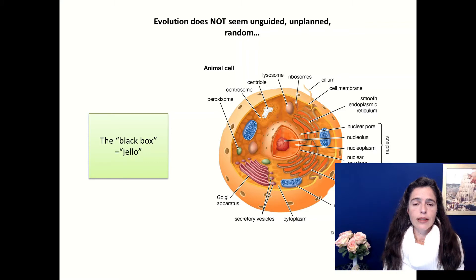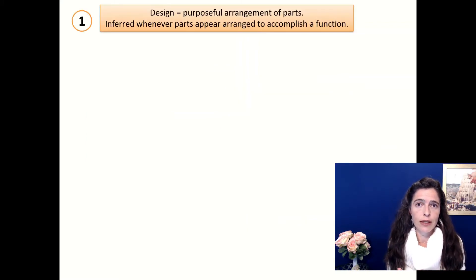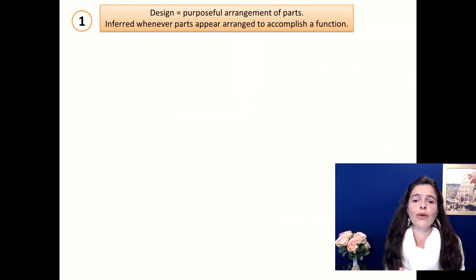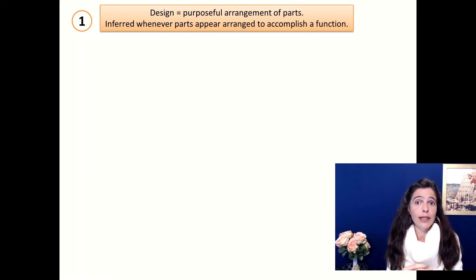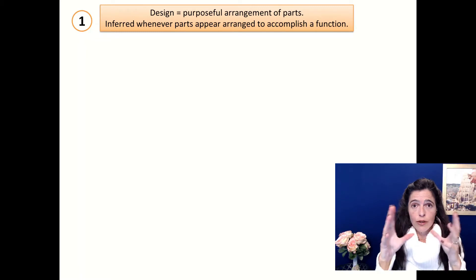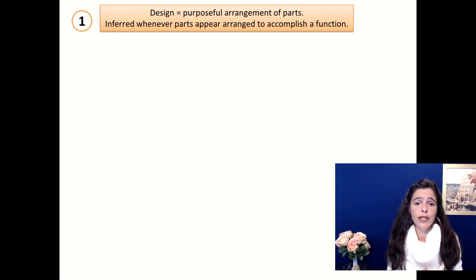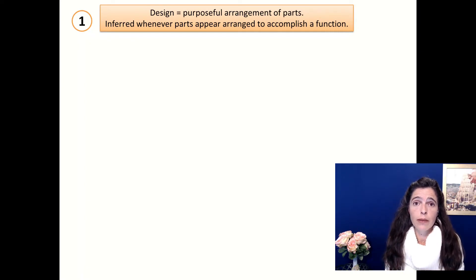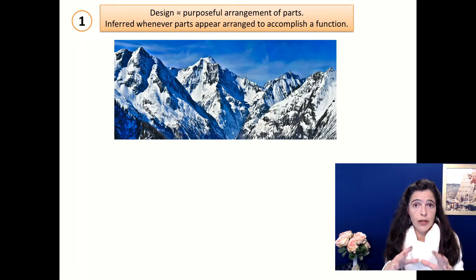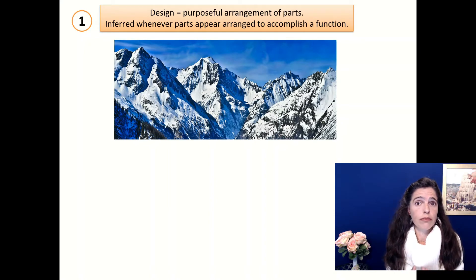Let's see some of the arguments. The way Behe defines design is a purposeful arrangement of parts. Basically, if it looks like it was done for a purpose and the parts are all organized — like in an engine or in a watch — then there is a design. When we look at it, we say there is a design; somebody or something designed it. We usually infer that whenever we see something made to accomplish a function. If you look at a car, you know that it was designed, that its parts are arranged for a reason, and that they need to accomplish the function of driving.